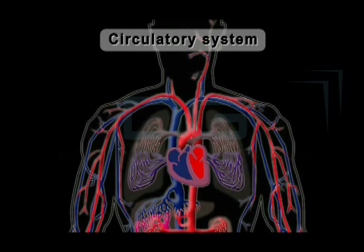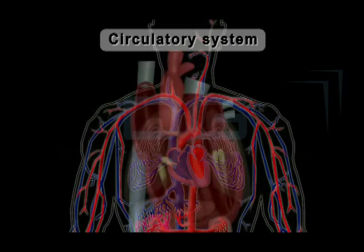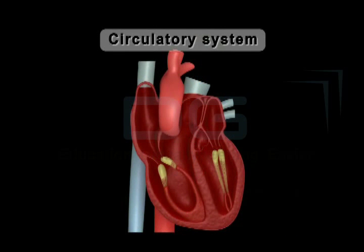The blood capillaries now recombine together and form thicker blood vessels called veins. Veins carry deoxygenated blood to the heart. The blood vessels which carry deoxygenated blood from the body to the heart are known as venakava.